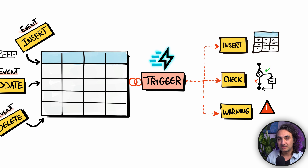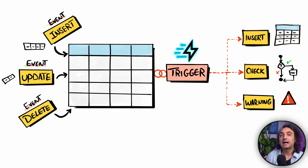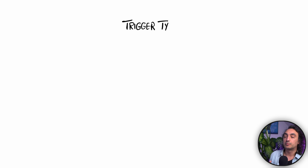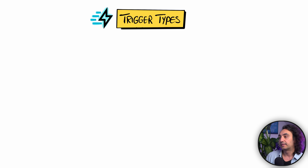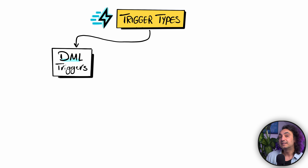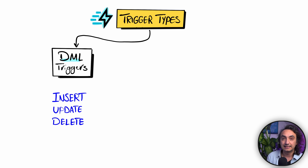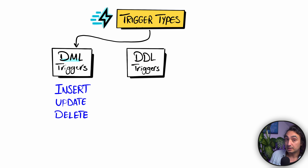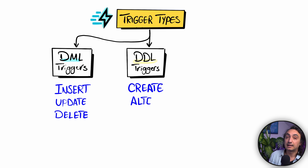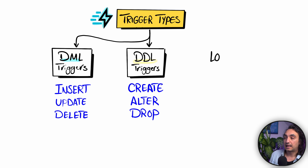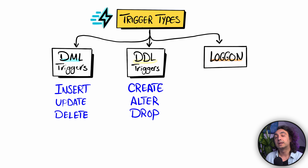Based on any changes to the table we can trigger other events, and we can do that using SQL triggers. For SQL triggers we have multiple types: DML triggers, which respond to insert, update, and delete statements; DDL triggers, which respond to schema changes like creating, altering, or dropping a table or even a view; and the third type is login triggers, which respond to a login event.